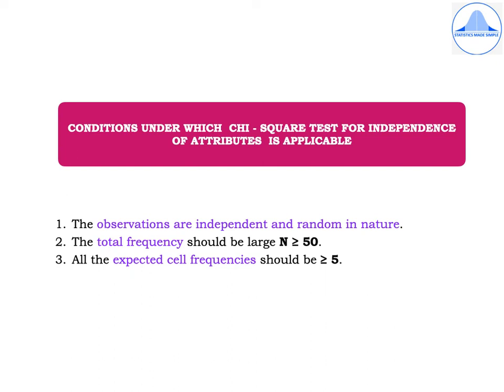There are three conditions under which the chi-square test for independence of attributes is applicable. First, the observations must be independent and random in nature. Second, the total frequency N should be large, usually greater than or equal to 50. Third, all expected cell frequencies should be greater than or equal to 5.